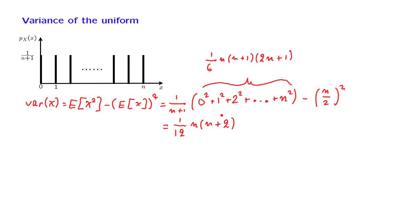How about the variance of a more general uniform random variable? Suppose we have a uniform random variable whose range is from a to b. How is this PMF related to the one we already studied? First, let us assume that n is chosen so that it equals b minus a.